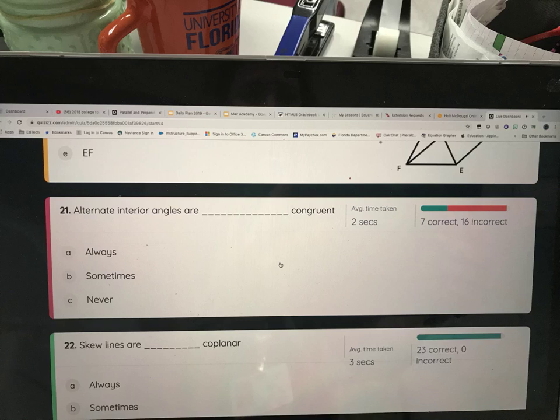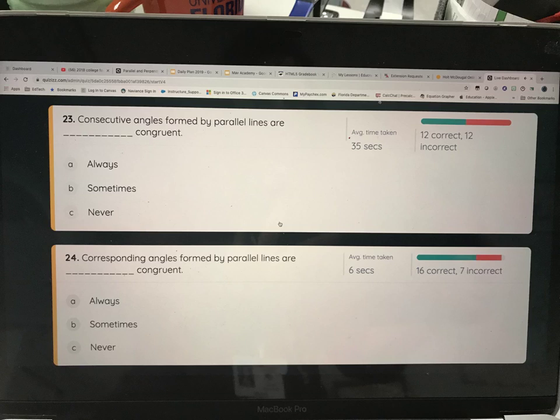These are your always, sometimes, never questions. So alternate interior angles are blank congruent. The word here is sometimes because it doesn't say that the lines are parallel. If the lines are parallel, then alternate interior angles are always congruent. But because parallel is missing there, that's why it's sometimes. 23 says consecutive angles formed by parallel lines are blank congruent. Consecutive interior angles are supplementary. And supplementary angles can sometimes be congruent, but they don't have to be. So this is sometimes. Corresponding angles formed by parallel lines are blank congruent. Corresponding angles with parallel lines are always congruent.